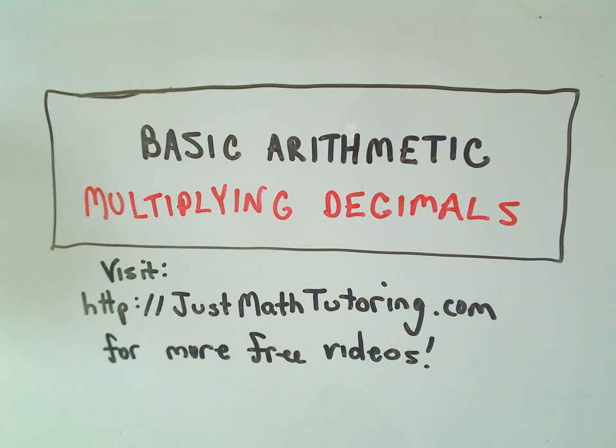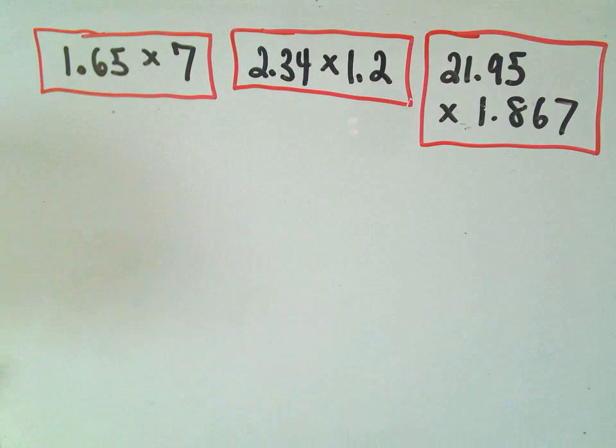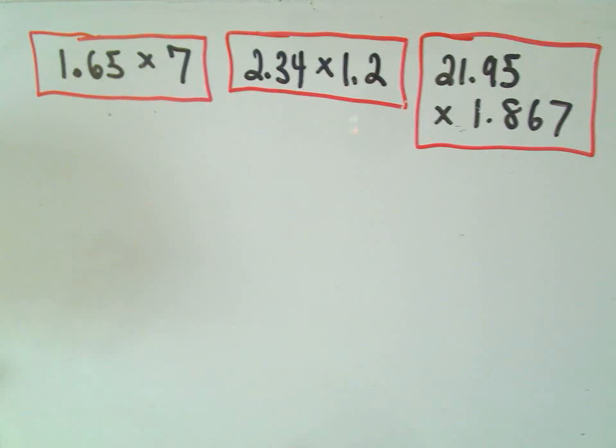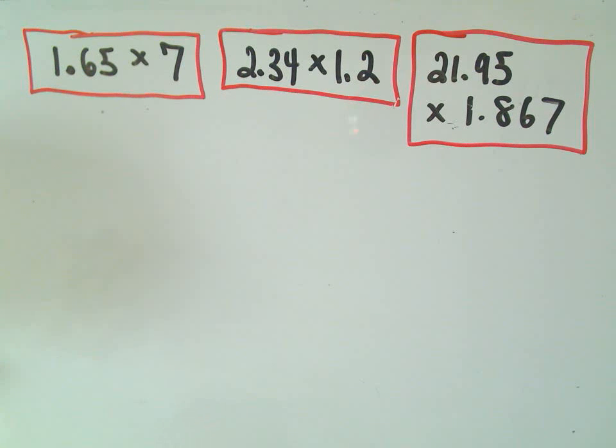Okay, in this video I want to talk about just some basic arithmetic and multiplying decimals is what we're going to do here. So I've got three examples here I'm going to do. I'm going to do them in order. There's really nothing too tricky about this. There's just one little thing you've got to remember, and then after that it's just knowing your multiplication tables.